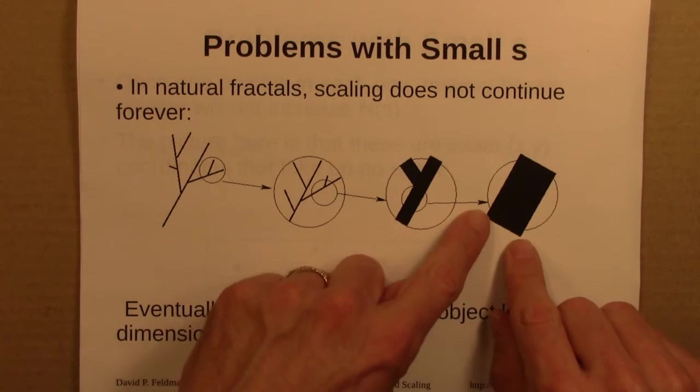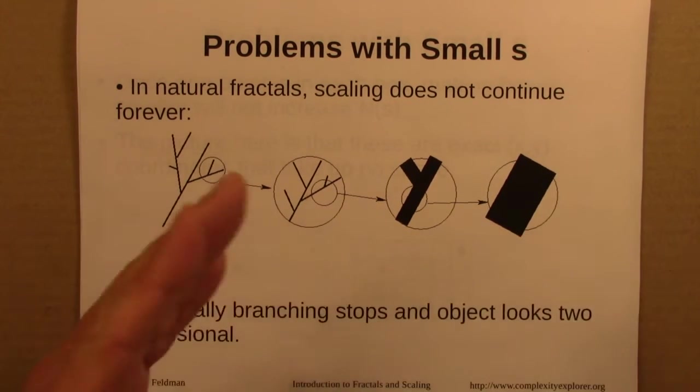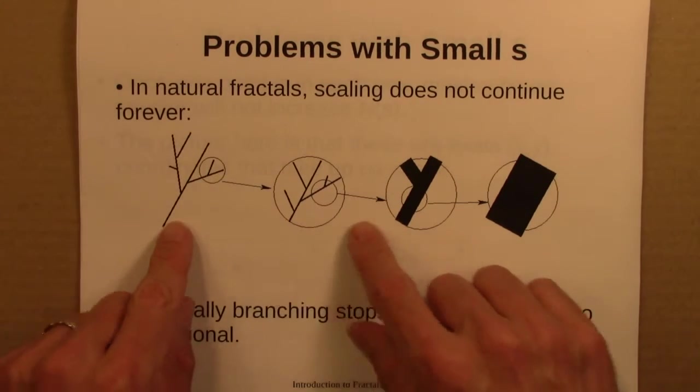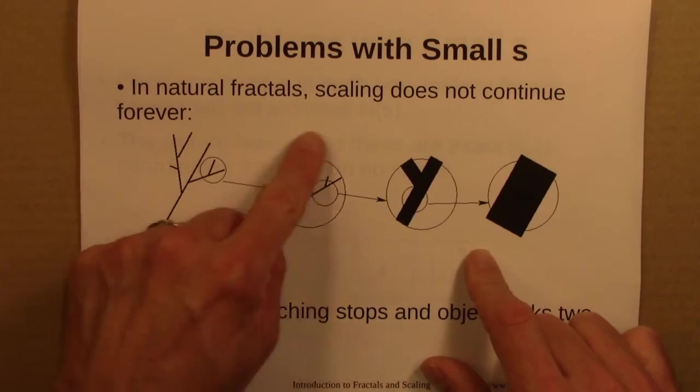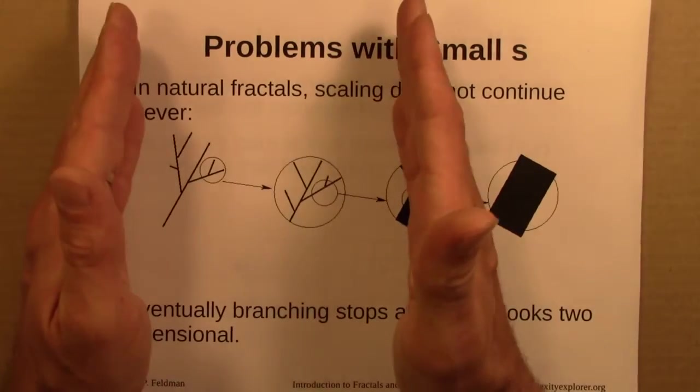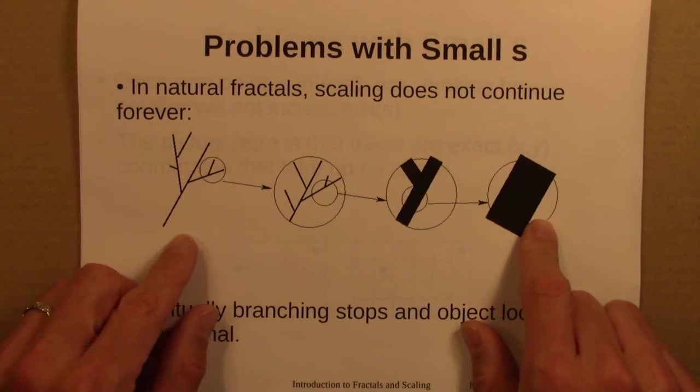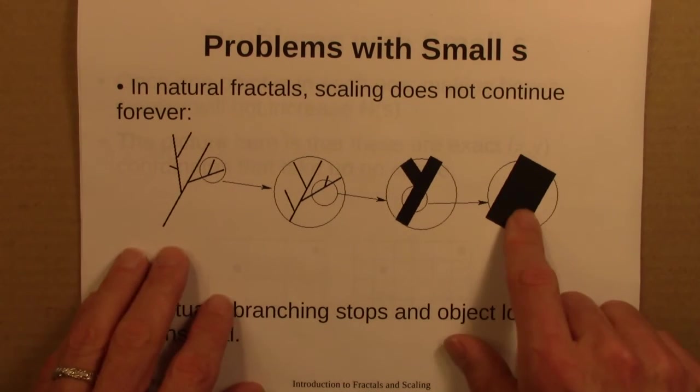And we zoom in on that branch, and we don't see more branches. And we zoom in more, eventually it starts to look two-dimensional. So we would see scaling behavior for a while, but not forever. At some point the object switches over and turns into maybe a two-dimensional object.